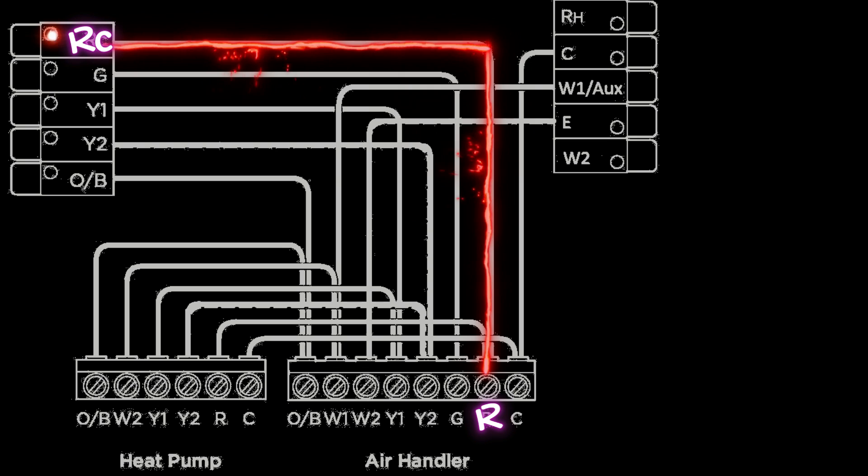Now keep in mind as we go through this, the color of the electricity you see flowing on the wire in the schematic is going to be the color of the wire we typically use to make these connections. So in this example, we have a red wire coming off that R terminal on the air handler going into the RC terminal on our thermostat.